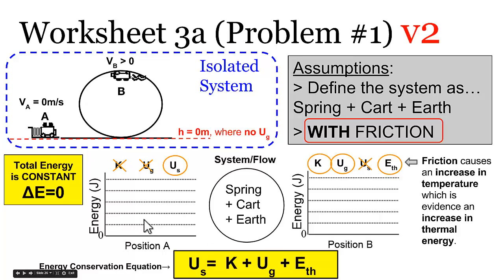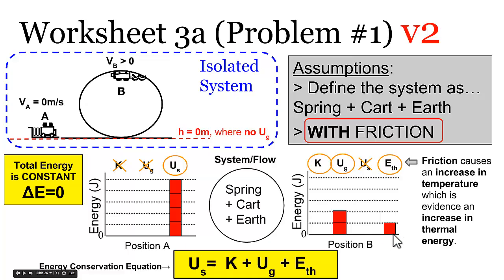In the bar chart with friction, we again put four bars for the initial spring potential energy. At position B, the car is at the same height, so there are still two bars of gravitational potential energy. Since friction is significant, we add one bar of thermal energy. That leaves one bar of kinetic energy — less than in the frictionless case — which makes sense because friction causes the car to move a little less fast.